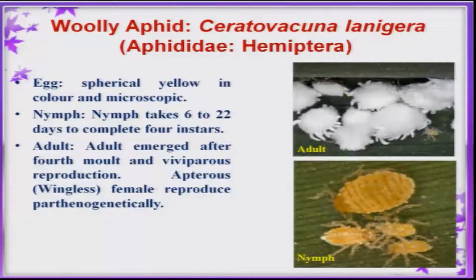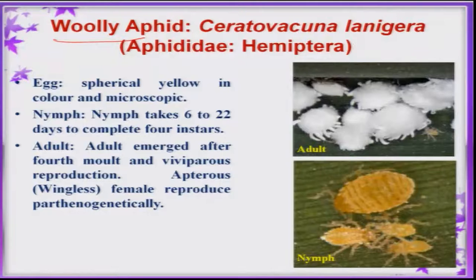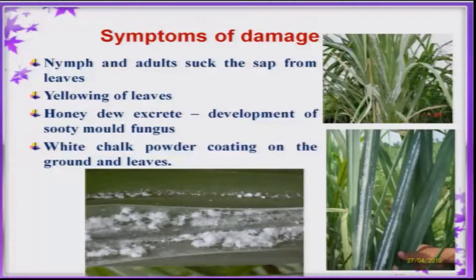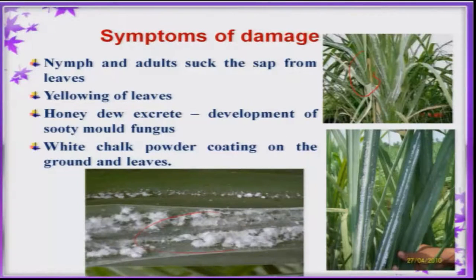Among the sucking pests, one is woolly aphid, Ceratovacuna lanigera. It was very severe some decades back and now occurs sporadically. In South India, Maharashtra and Karnataka are the major states where woolly aphid causes much damage. Both nymphs and adults suck the canes, causing leaves to turn yellow. Because of honeydew secretion, sooty mold develops on the leaves, and in severe cases a white chalk powder is seen on the entire leaf surface and even on the soil surface.